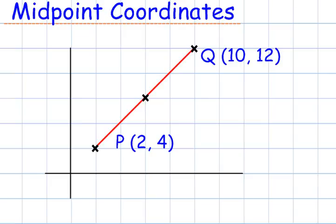First of all, let's have a look at the x-axis. So, P goes over to 2, and Q goes over to 10. The midpoint of 2 and 10 is 6.